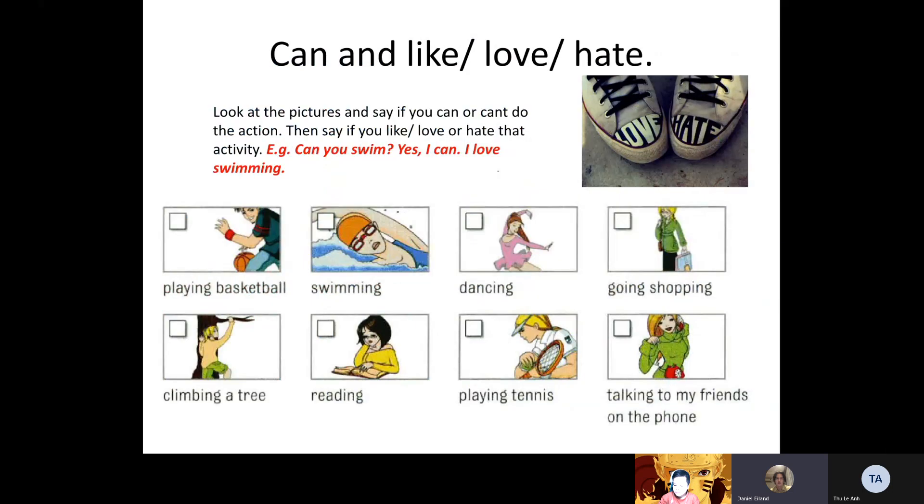And here is the next part of the test. It's about can and like, love and hate. So you're going to look at these pictures and say if you can or can't do the action, then say if you like, love or hate the activity. For example, I will ask you can you swim? You would say yes I can, I love swimming. So can you dance, Hoàng Phúc? Yes, I can. And how do you feel about dancing? Do you like, love or hate dancing? I like dancing. All right, very good.